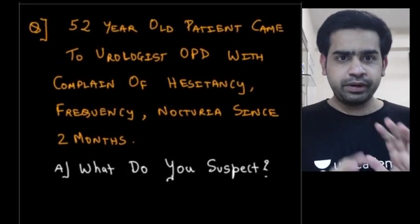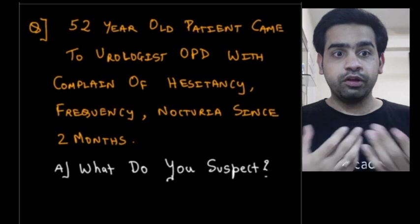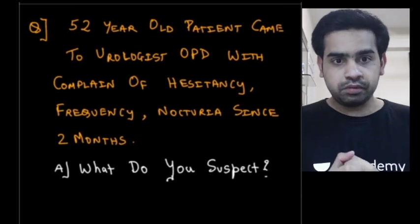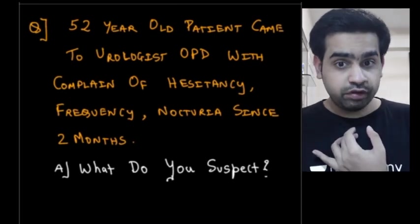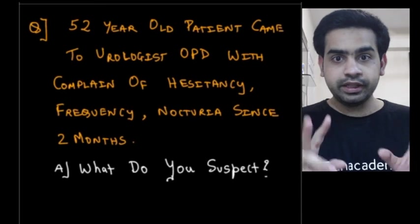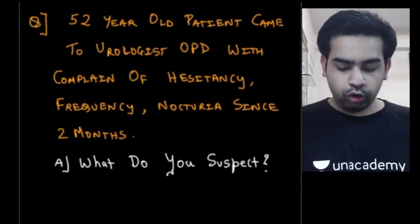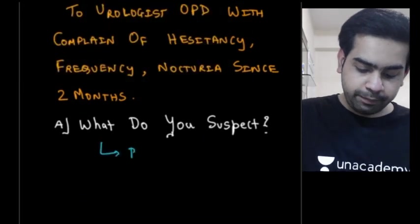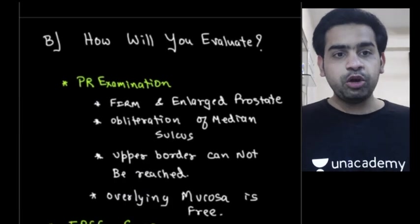The case scenario is pretty straightforward. There is a 52-year-old man coming to a urology OPD with complaints of hesitancy of urine, frequency of urine, and nocturia since two months. Hesitancy is an obstructive symptom, and frequency and nocturia are irritative symptoms — these are lower urinary tract symptoms (LUTS). You suspect this patient to be suffering from benign prostatic hyperplasia, that is BPH.